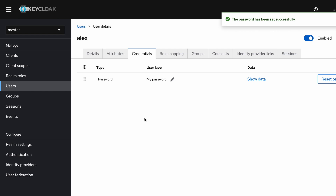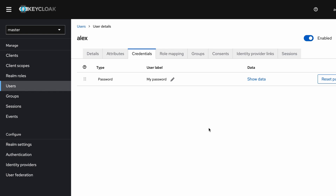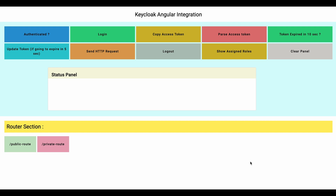Now all the Keycloak-level configurations are done. I am going to visit my Angular code, but before that I would like to show the user interface of this Angular application — it will make it easier to understand its structure. This is the Angular application. I have implemented multiple buttons to demonstrate different functionalities.